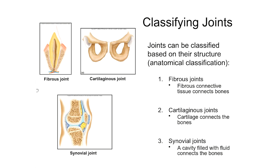A second type of joint, classified by structure, is the cartilaginous joint. Looking at this picture of the hips, we have a left and right hip coming together, with a pad of fibrocartilage sitting in the space between those bones, holding them together. Because cartilage is connecting the bones, this is a good example of a cartilaginous joint.